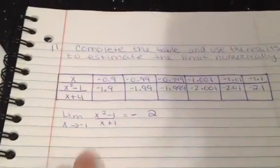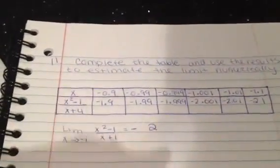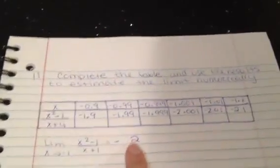As you see, as x approaches negative 1, we get negative 2. That's how you solve it and find the limit of the equation.